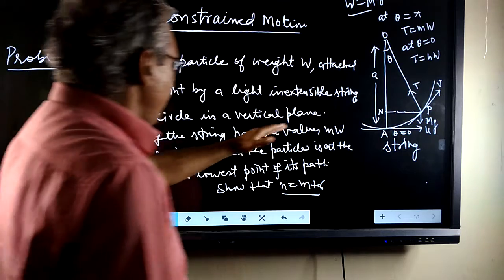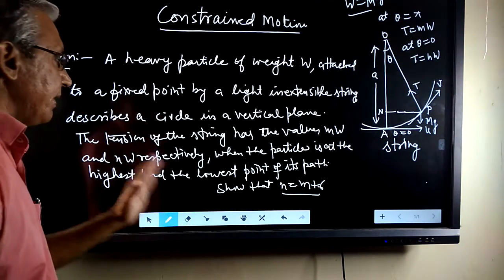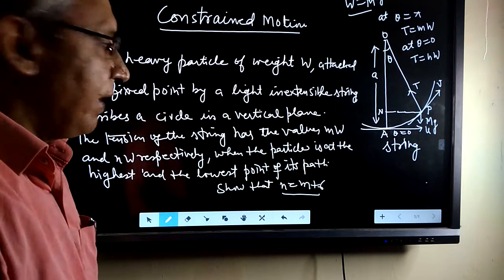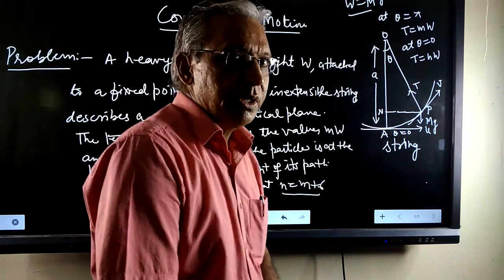The tension of the string has the values mw and nw respectively when the particle is at the highest and the lowest point of its path. Then we have to show that n is equal to m.